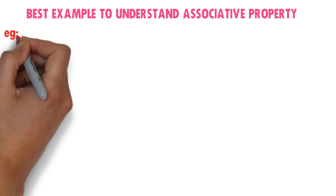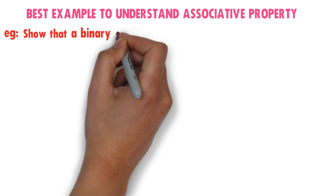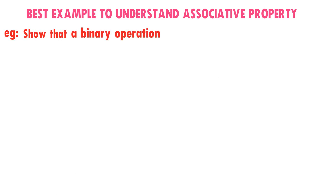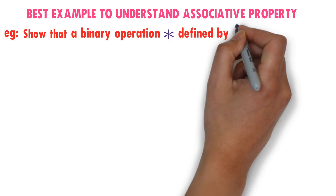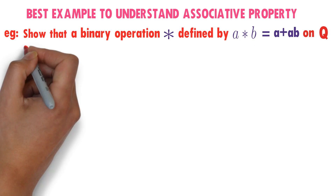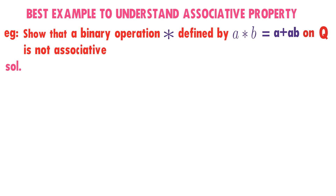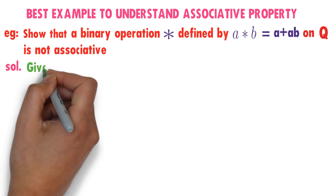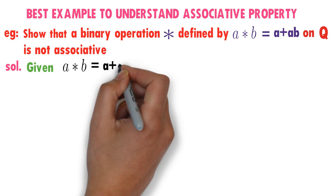Here is the question. Show that a binary operation star defined by a★b = a + ab on the set of rational numbers is not associative. So we need to show that star is not associative. Given that a★b = a + ab.